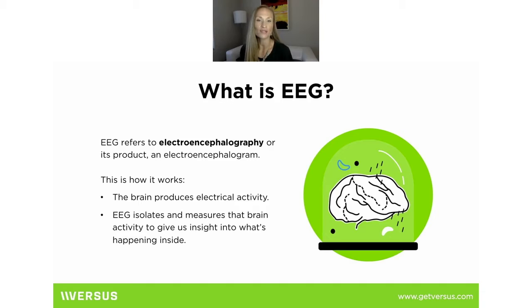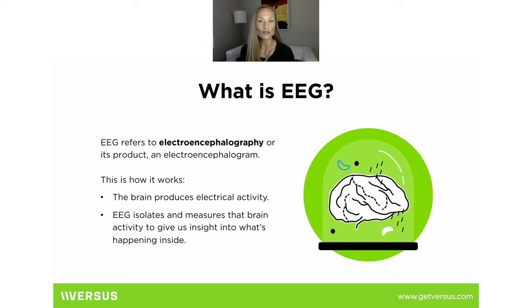EEG stands for electroencephalography, and what you get from that is the output which is an electroencephalogram — basically the picture of the electrical activity of the brain. Our brain produces electricity; that's how it works. There's plenty of information out there for those interested in diving deeper.